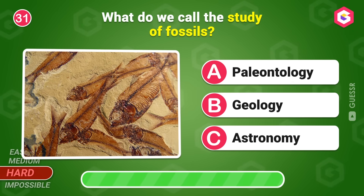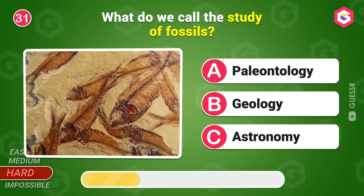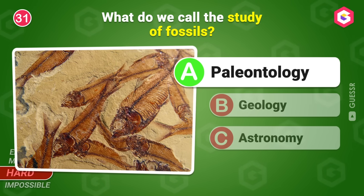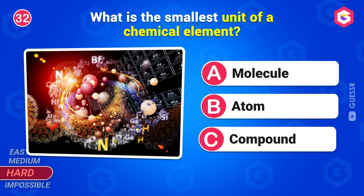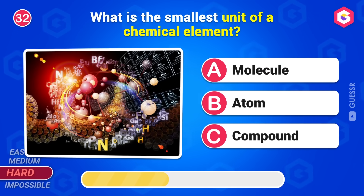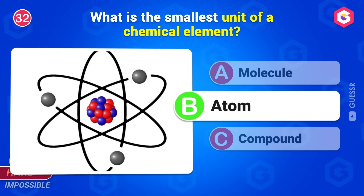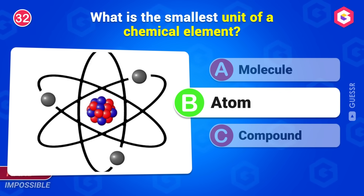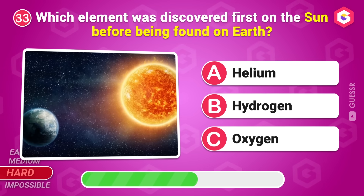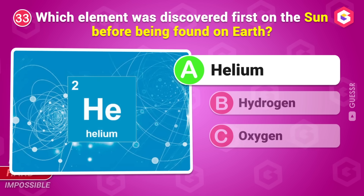What do we call the study of fossils? Paleontology. What is the smallest unit of a chemical element? Atom. Which element was discovered first on the sun before being found on Earth? Helium.